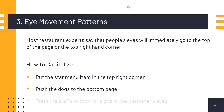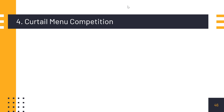Also, push the low-performing or dog items to the bottom of the menu page, as that area is mentally weaker. Additionally, train your staff to look for visual clues in customer behavior — notice where the customer's eyes are going: top left, top right, or bottom — and guide them toward the top items. Staff should know which items are popular and profitable and recommend accordingly. The fourth principle is curtail menu competition, which we'll discuss in the next video.